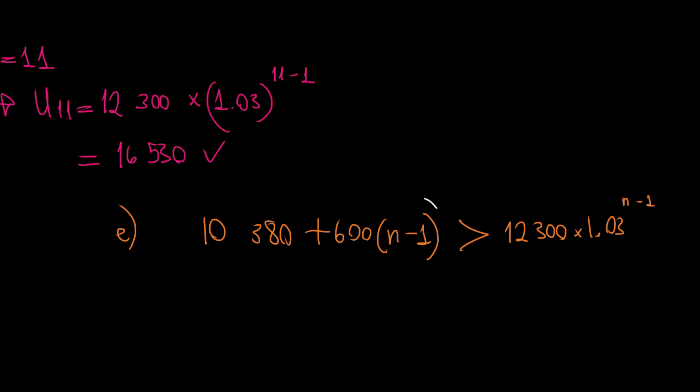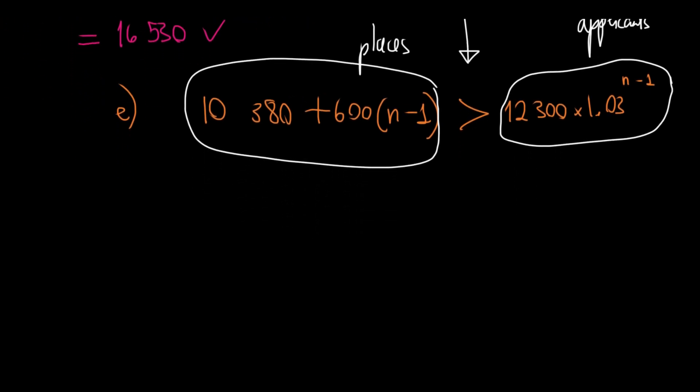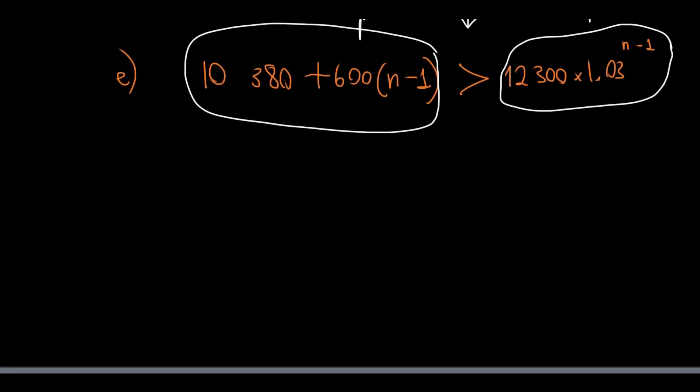We have the places of the university available. Places. And these are applicants. Okay. We are looking for that value of N when this holds true. The number of places will exceed the number of applicants. The best way to approach this question is with a graph. So, I'm going to go on my GDC, plot the graph. You can do the same. You can plot first graph, second graph on the same page and you will see what is going on.